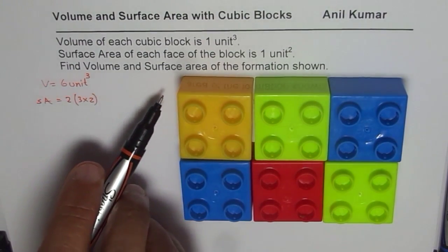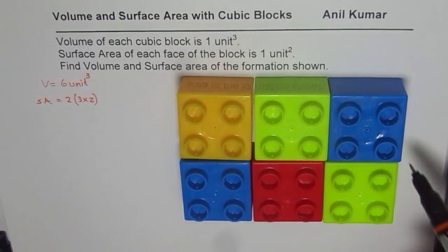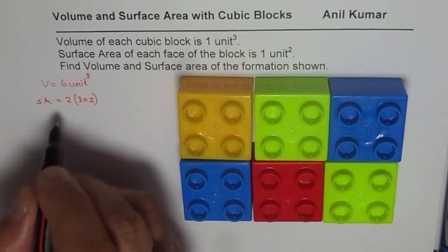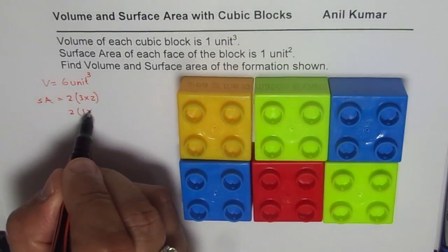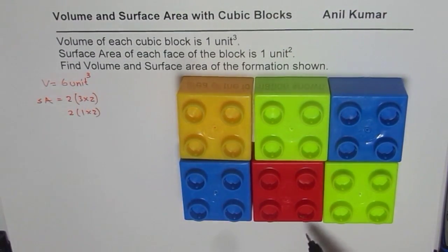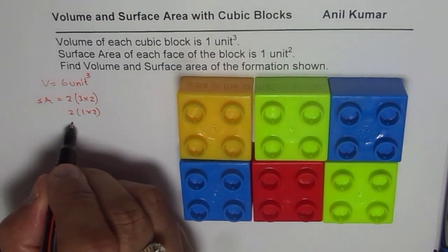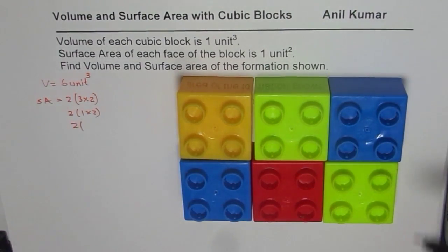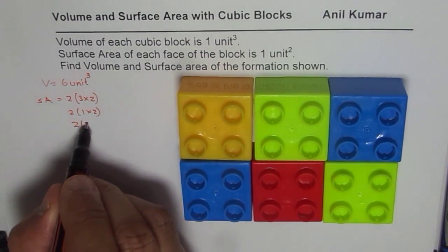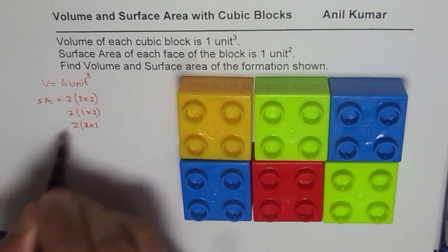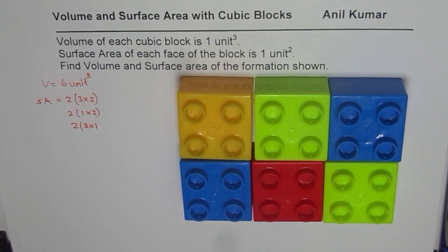If you consider these sides, so we have 1×2 and there are two on the side. So 1×2. And the front and back, you have 3×1. So two, since one is at the back, one is at the front. So we have 3×1.